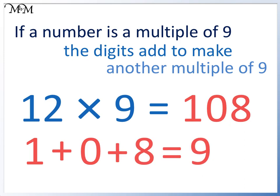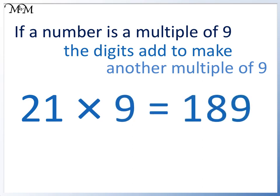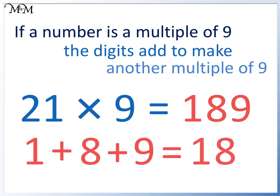21 times 9 equals 189. Here 1 plus 8 plus 9 equals 18. 18 is a multiple of 9, and so 189 is a multiple of 9.